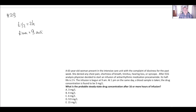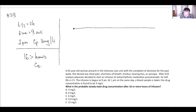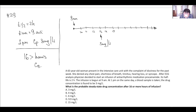Next question: infusion started at 9 AM. At 1 PM on the same day a blood sample is taken, and the drug concentration is 3 milligrams per liter. What is the predicted steady state concentration after 16 or more hours of infusion? We started at 9 AM and at 1 PM — that is 4 hours elapsed. The half-life is 2 hours, so we need to find the steady state concentration.